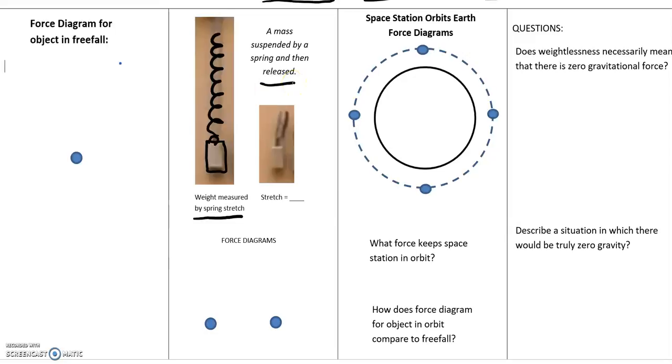So this is a picture. Here's that same mass and the spring here has been retracted and the spring and the mass are falling. And the stretch we would say here is zero, whereas before it was not zero.